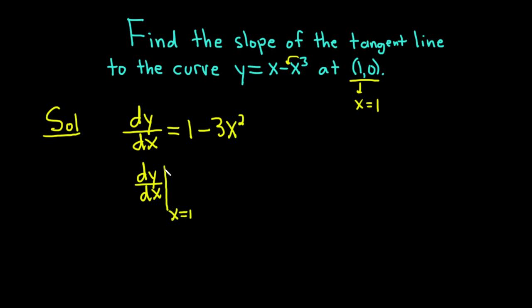That means you're going to evaluate dy/dx at x equals 1. That means everywhere you see an x, you're going to put a 1. This is equal to 1 minus 3 times 1 squared, which is 1 minus 3, which equals minus 2.